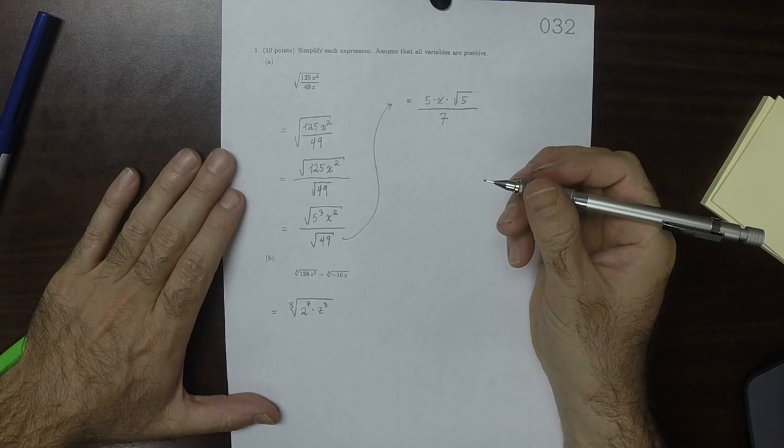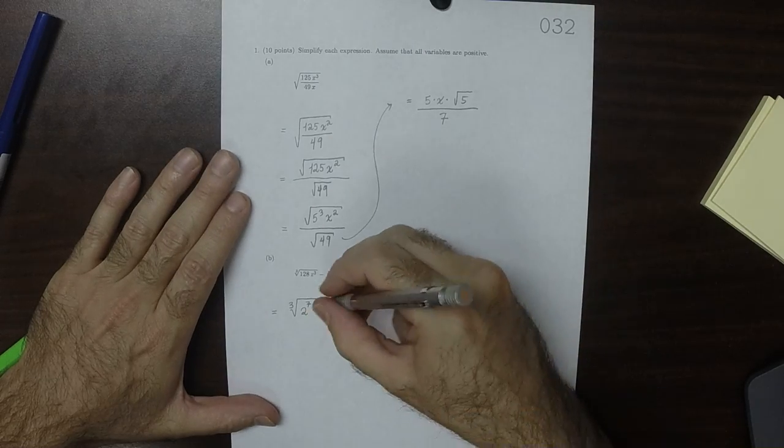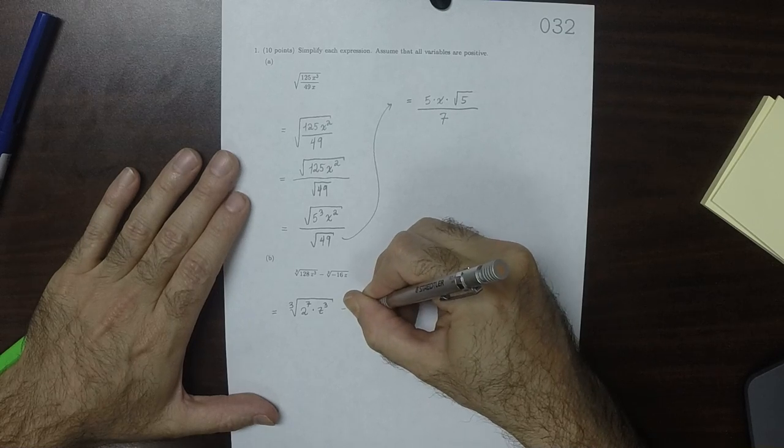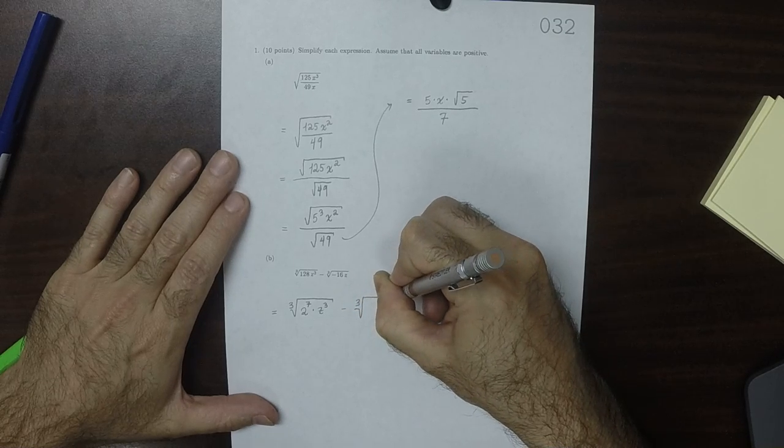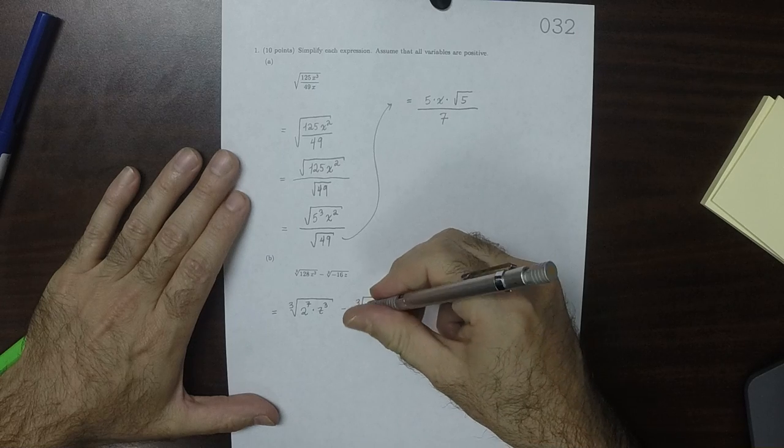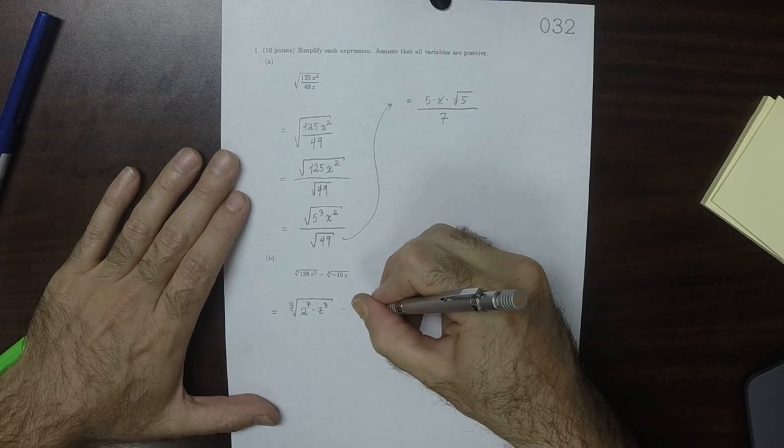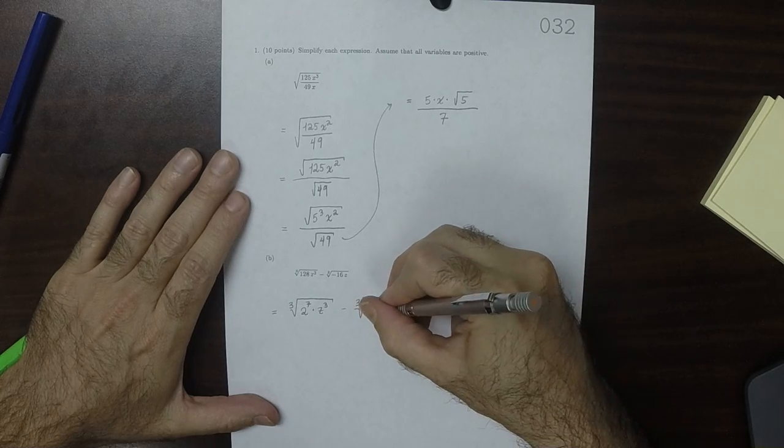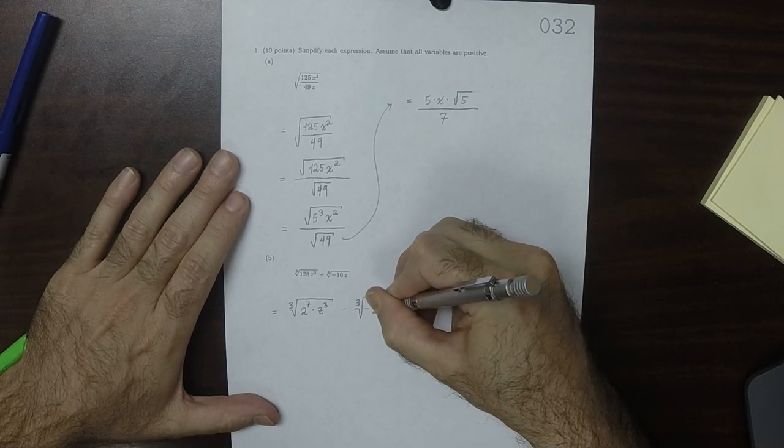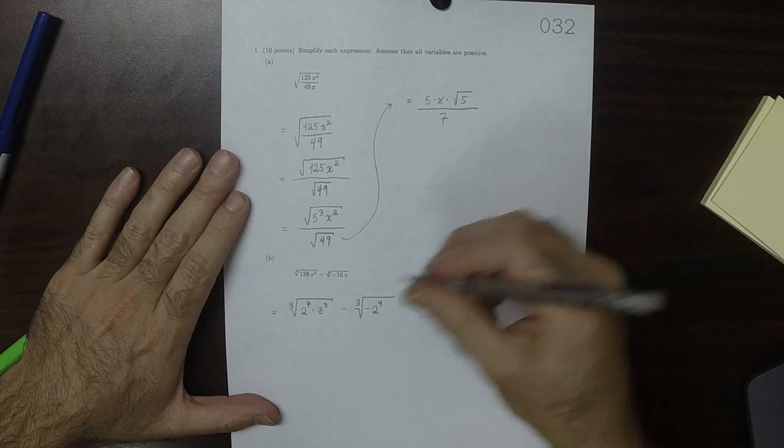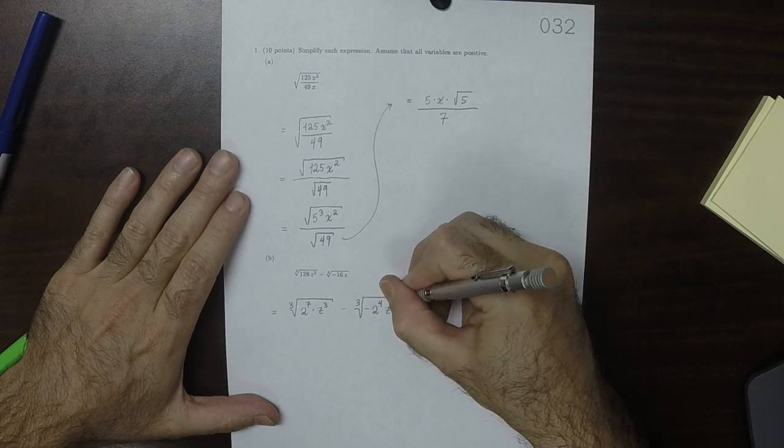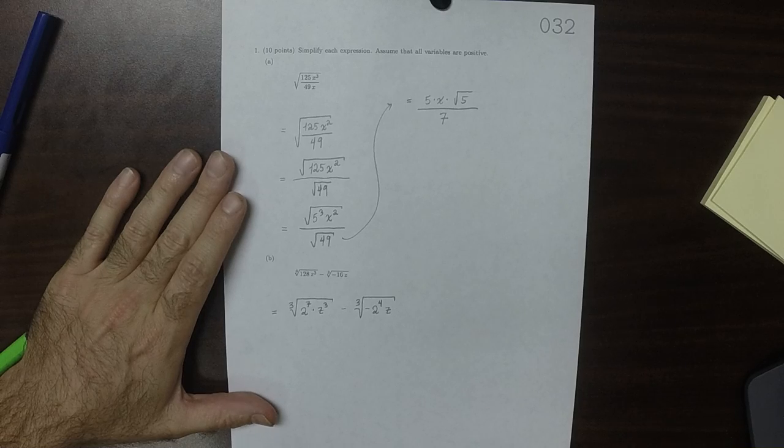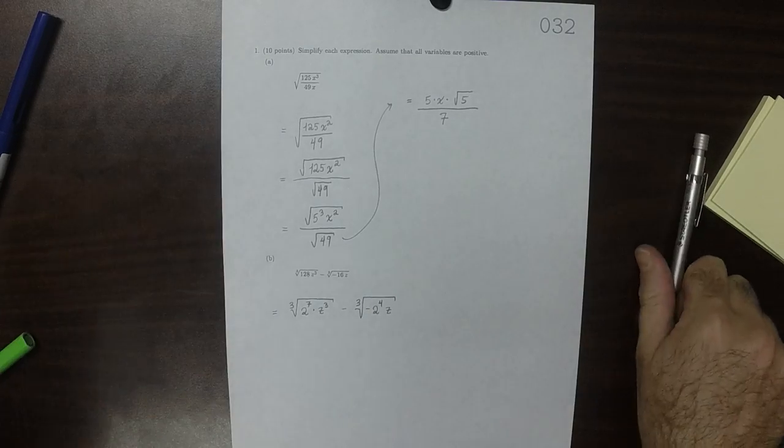and then minus the cube root of, that'd be negative, and then 2 to exponent 4, z. So now let's do this in steps.